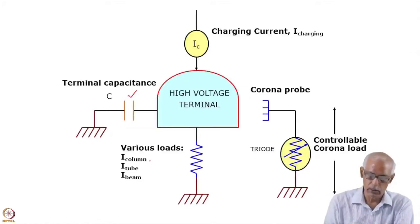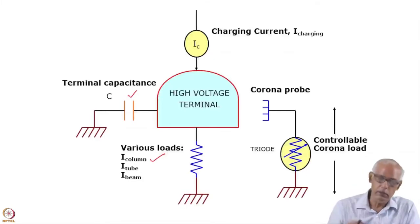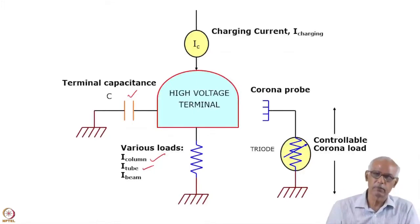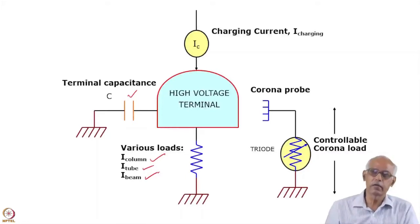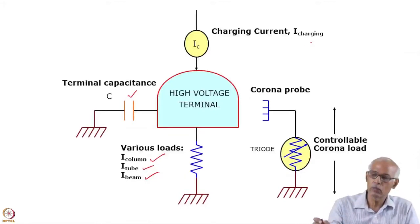Various loads are there which the charging current has to match. There is corona, there is a column current which is responsible for voltage gradient, and after charging there will be some leakages in the accelerating tubes, so we call it I-tube. We are also accelerating the beam, and I-charging has to at least match all of these.